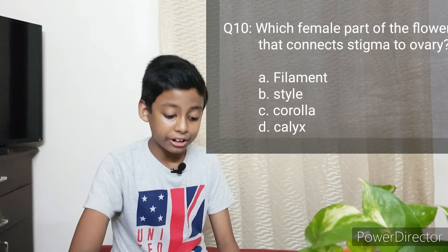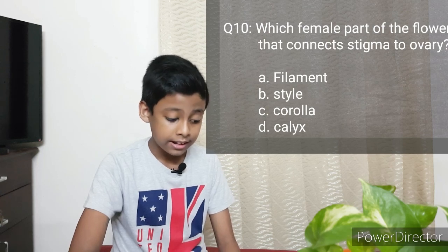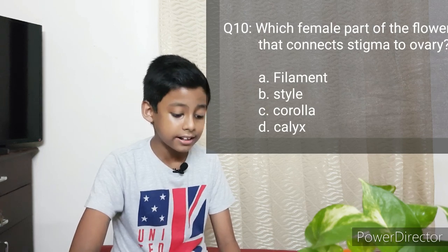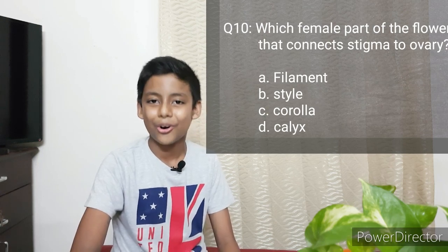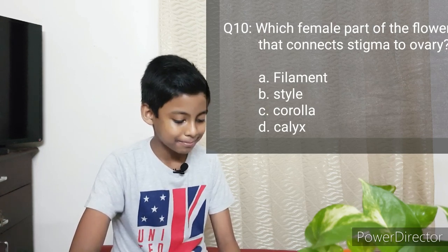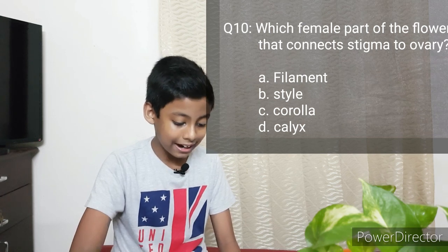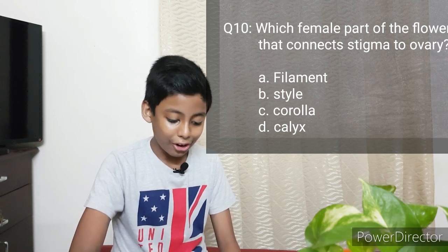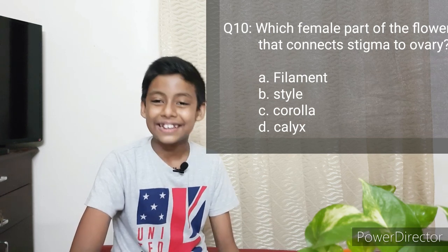The next question: Which female organ of a flower connects the stigma to the ovary? Options: Filament, Style, Corolla, Calyx. The answer is Style.